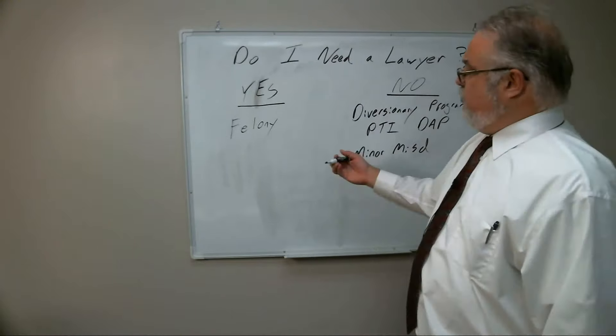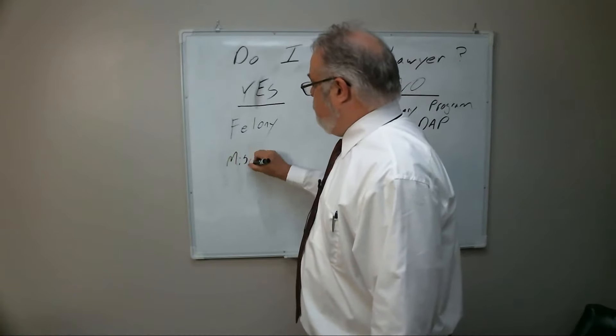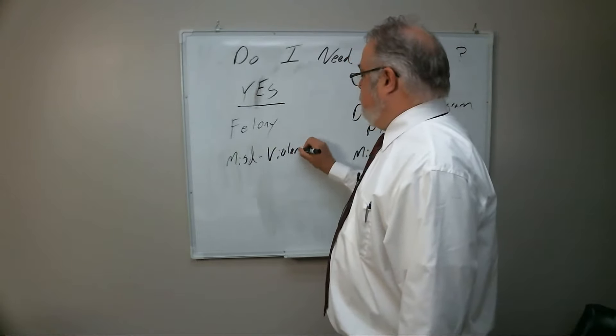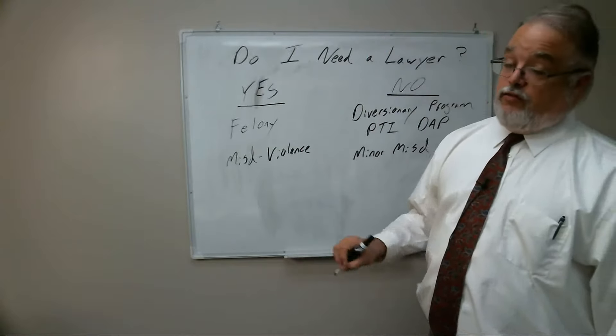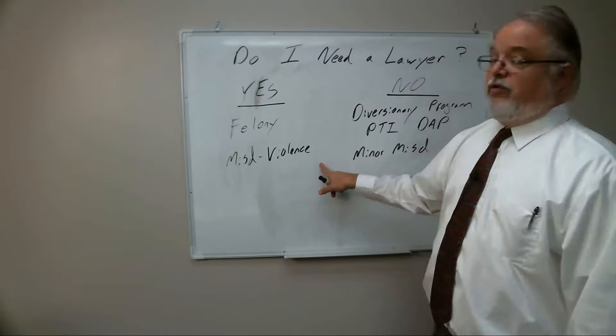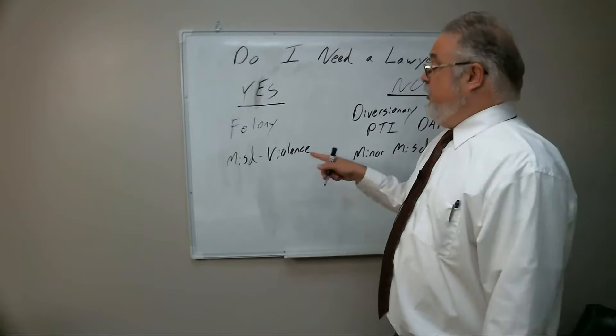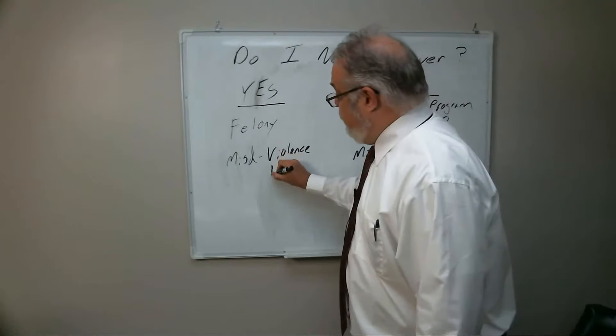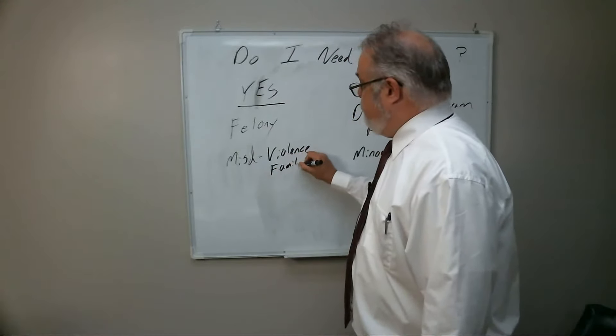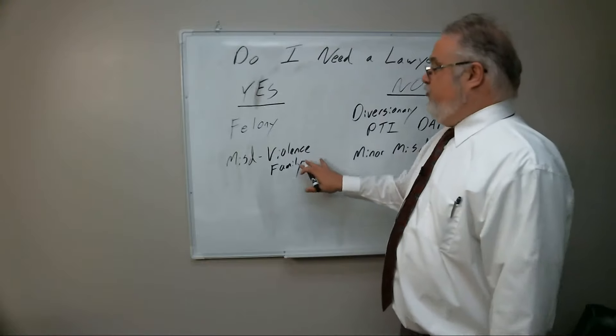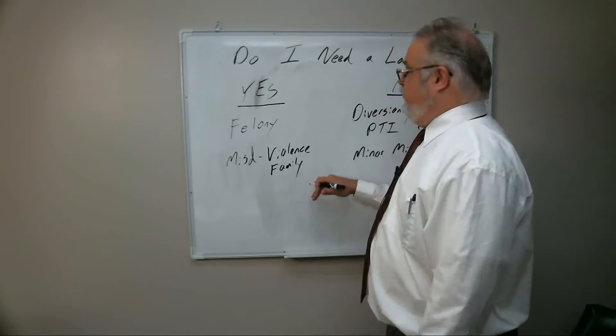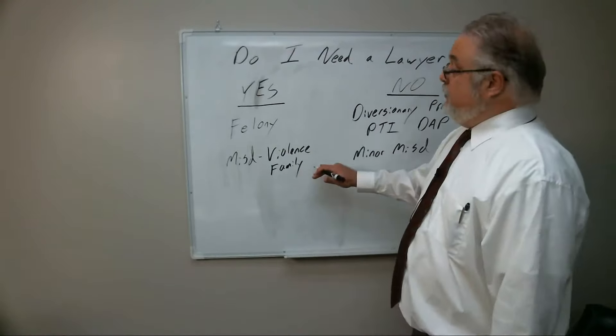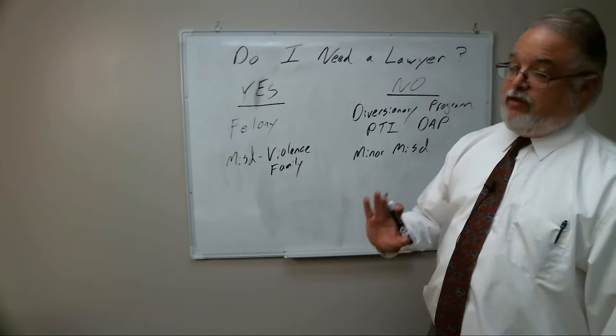So, now let's talk about the misdemeanors where you do need a lawyer. I would say any misdemeanor involving violence, okay, is the first kind. A crime of violence, even if it's a misdemeanor, has serious repercussions that you really should talk to a lawyer about. Especially, especially if it involves family. There are like federal implications with any kind of violence involving family. So, domestic violence, okay. So, any kind of misdemeanor like this, you really should hire a lawyer.